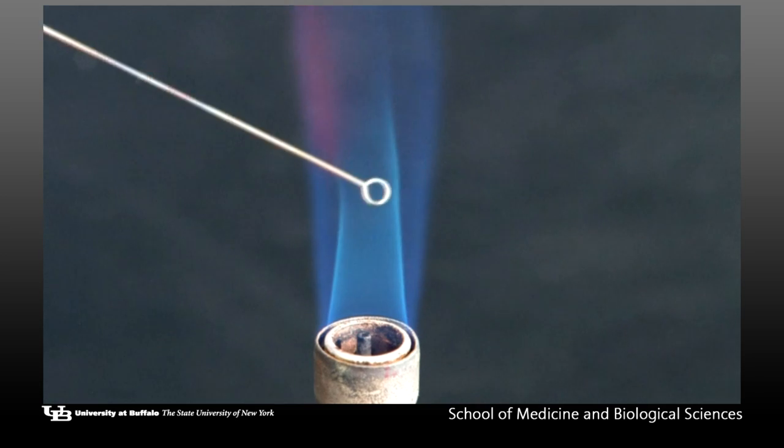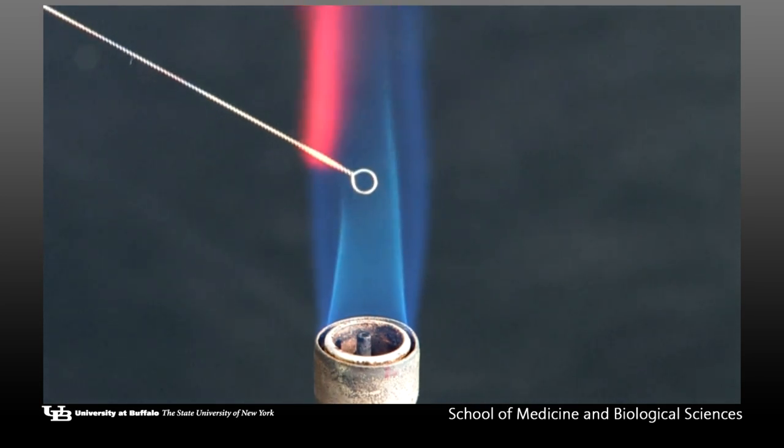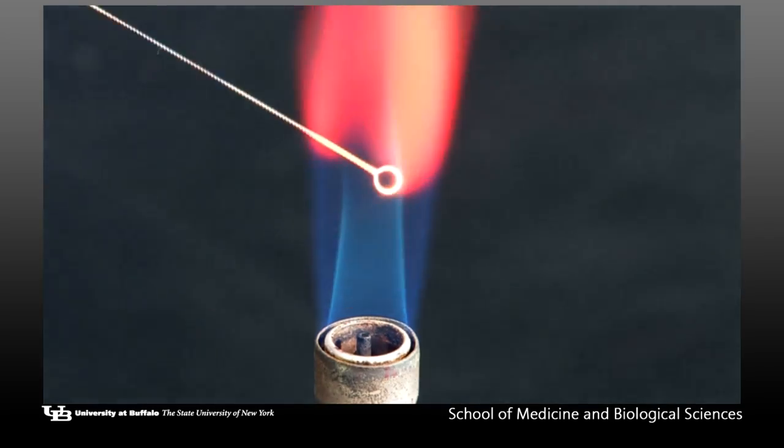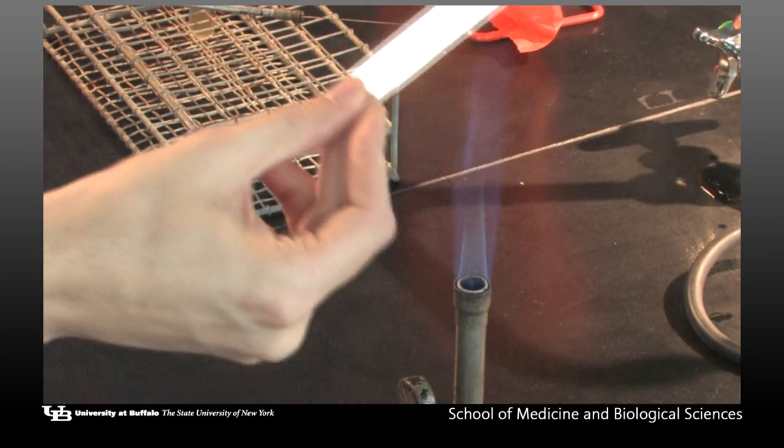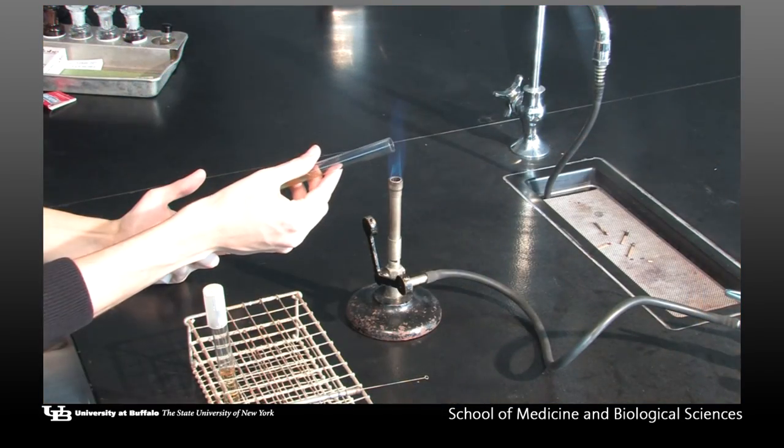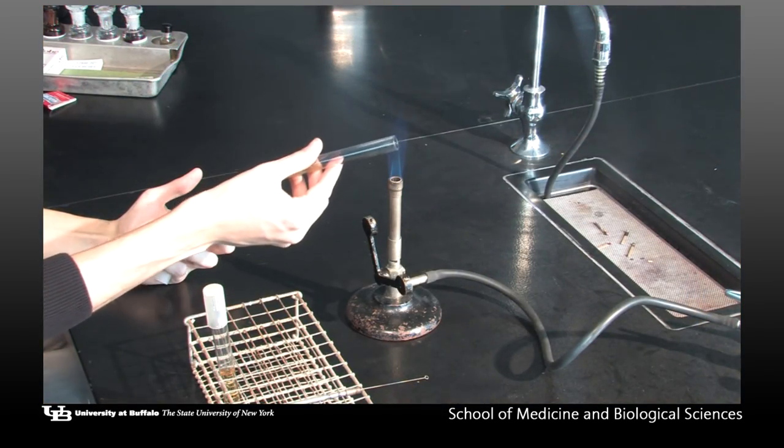Sterilization of the inoculating loop is done in the hottest part of the flame, the tip of the inner cone. Heat fixing bacterial smears on slides and sterilizing the mouths of open glassware items may be done in the outer cone.